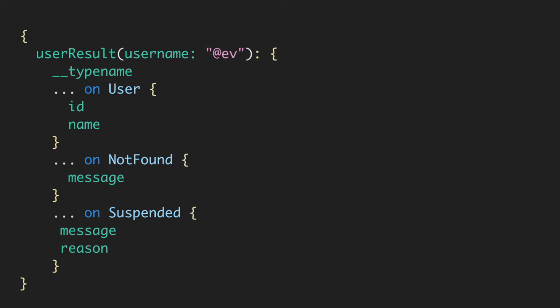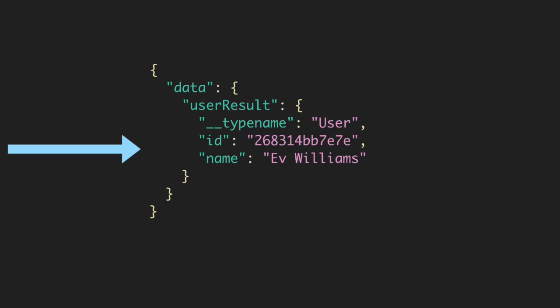Now that we've built out our entire schema, we can actually make a query. Same query as before, it's going to look a little different. We're querying on a user result but still passing a username. We're going to use Ev because we know that person exists. We're going to ask for a type name — we want to see what type it is because we have a user result now. And this is how you query for a union — so we have a user, and on that user we want to get an ID or a name. And maybe that user isn't there, so we look for the not found error or alternative result and ask for a message. On suspended we want a message and a reason. We got a bunch of data back — it's a user result, the type is user, and we get the user fields back.